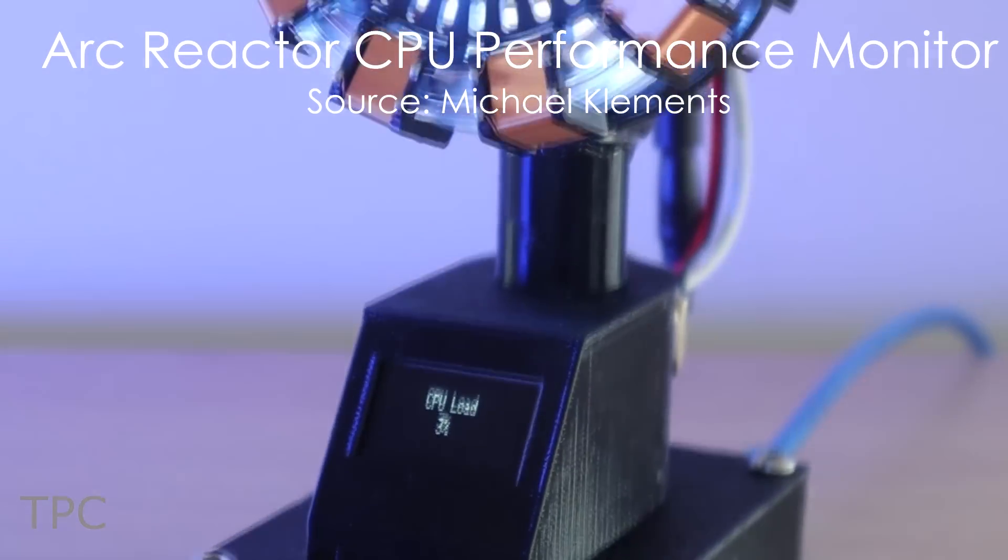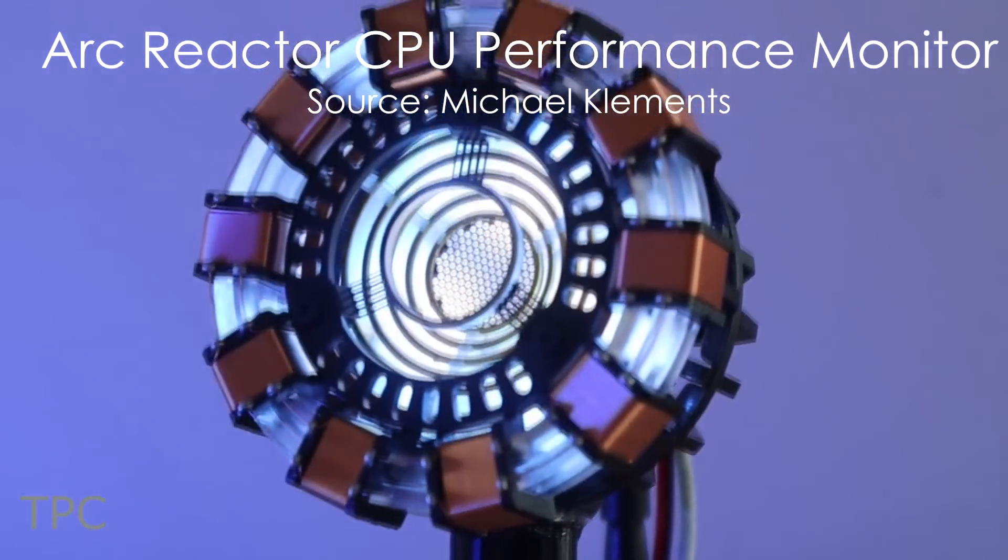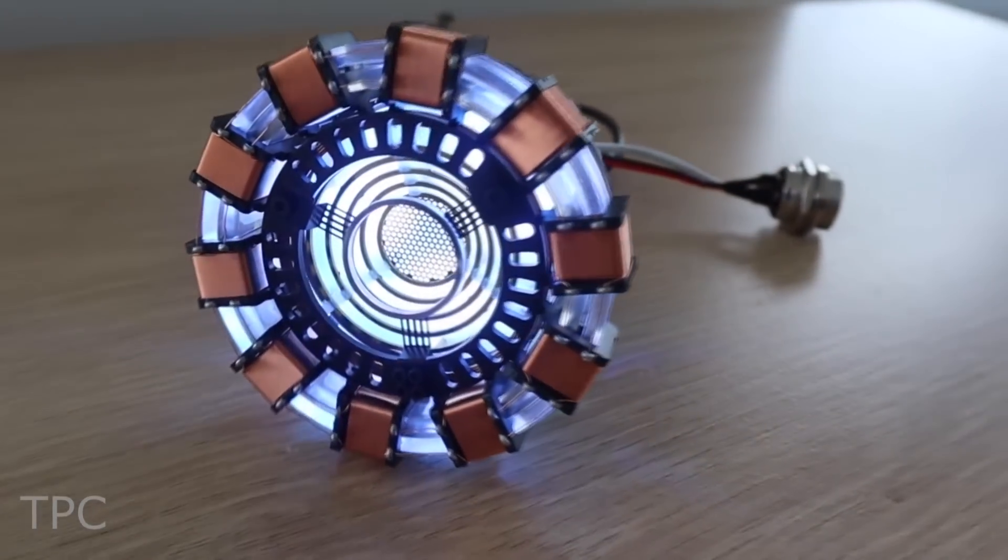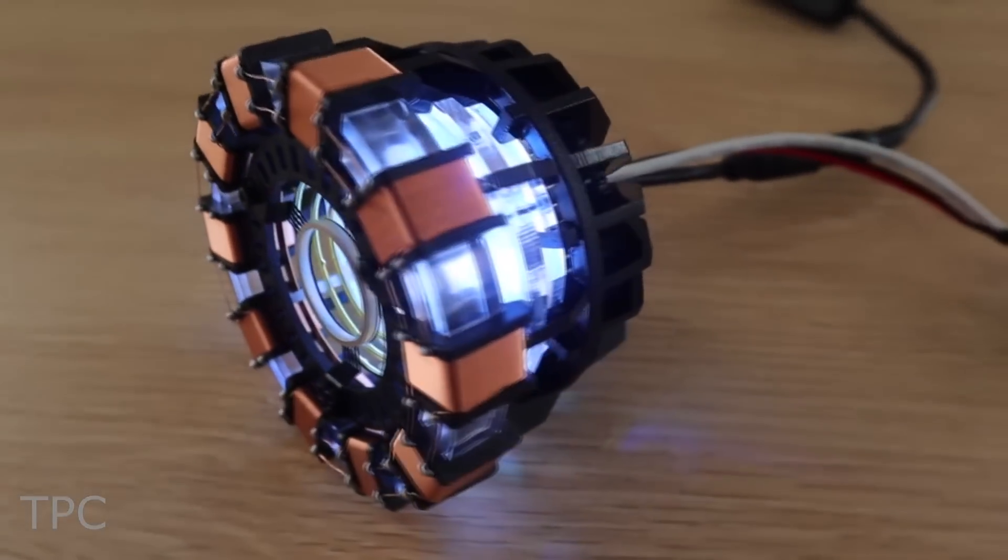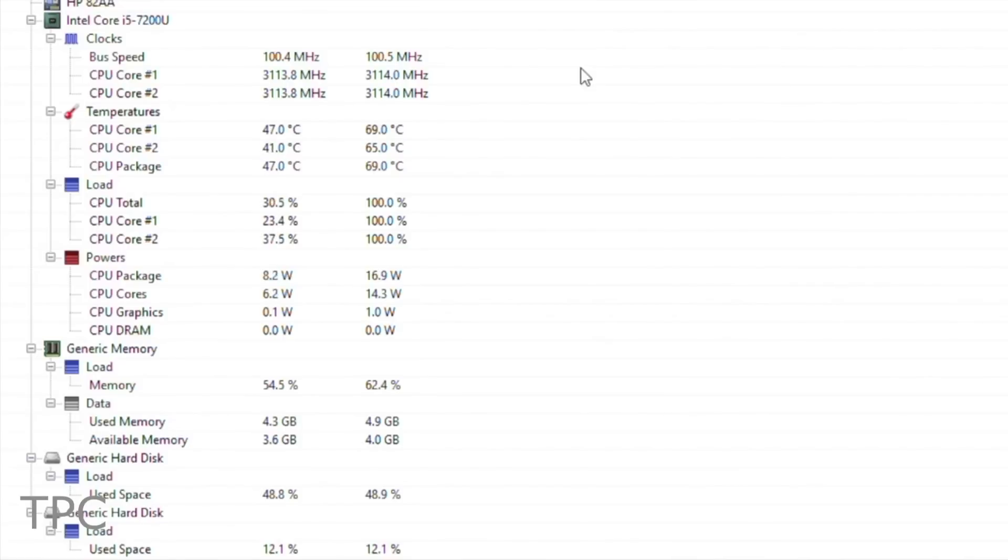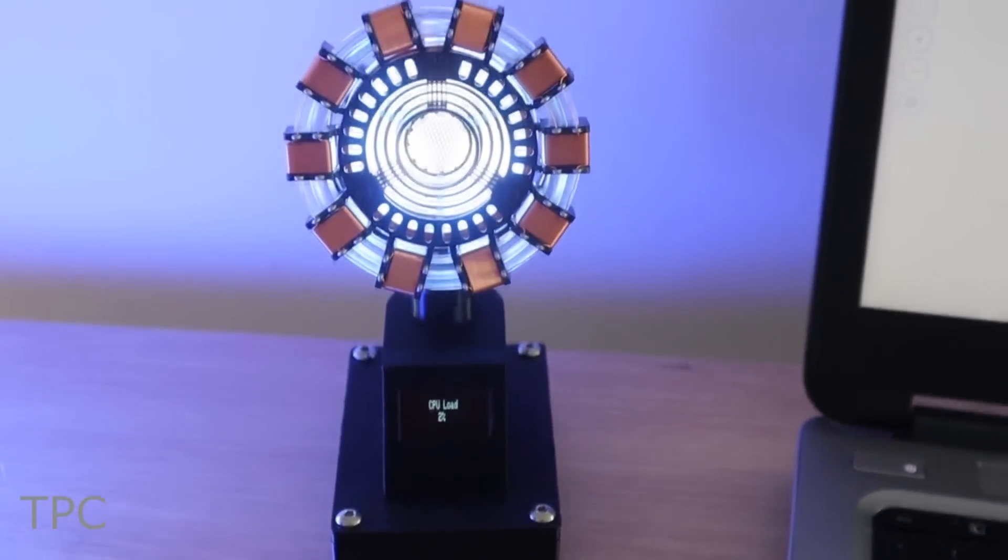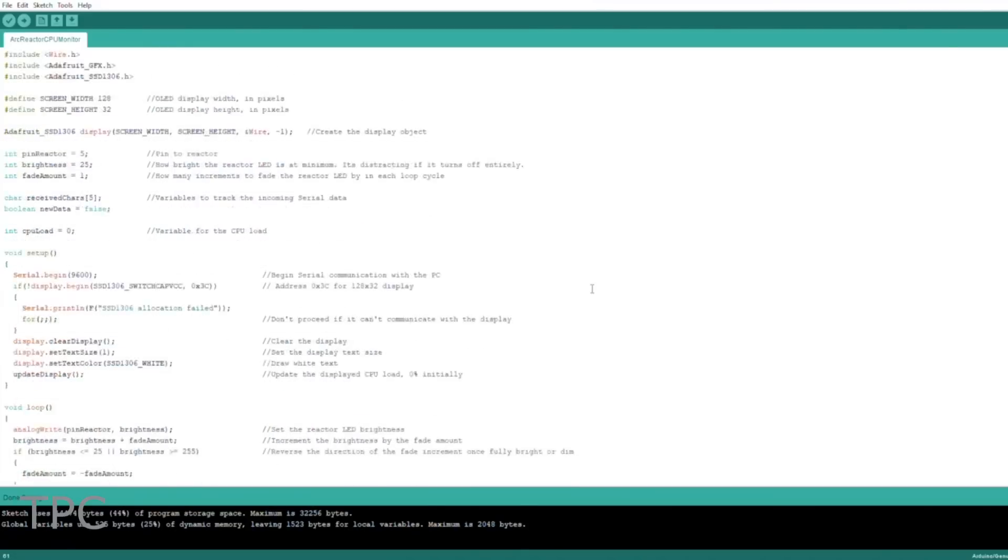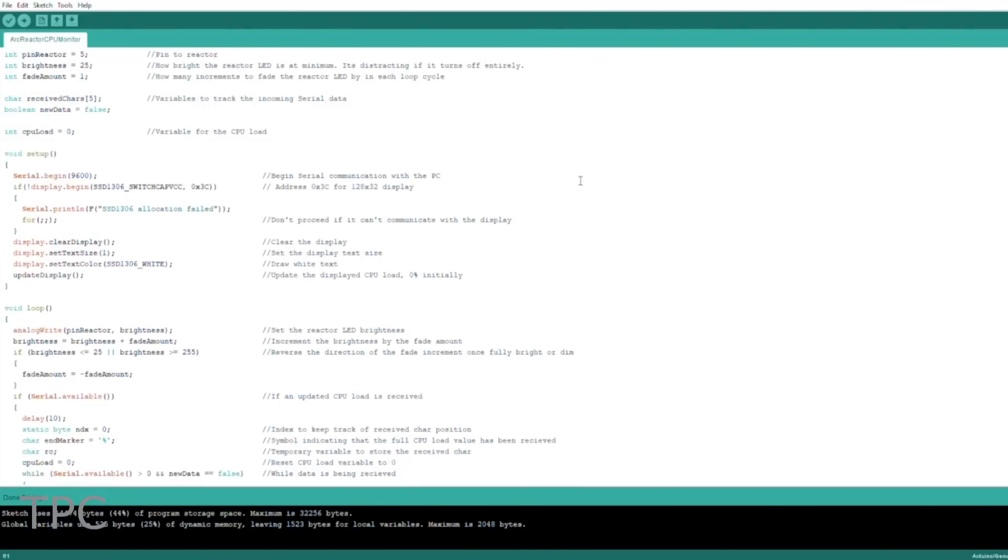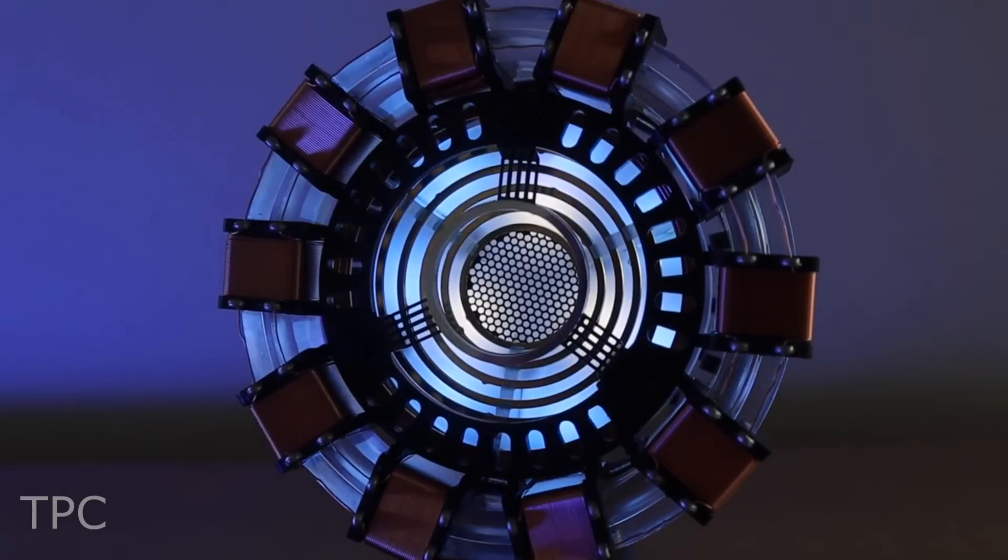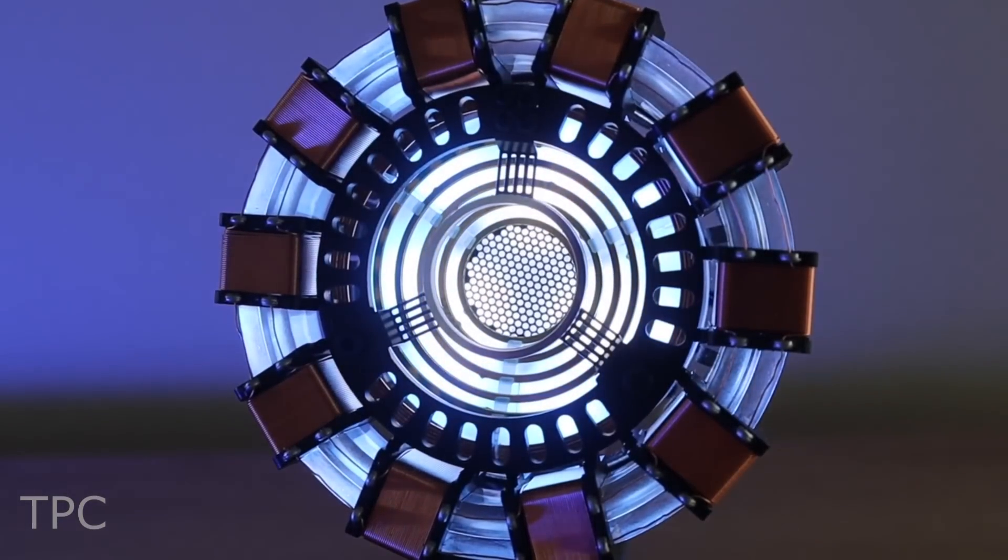This is an Arc Reactor CPU performance monitor. It plugs into one of your computer's USB ports and displays the CPU performance. A Python script reads the performance data from a hardware monitoring application and posts this data to the Arduino through a serial communication port. The Arduino receives updates on the computer's CPU usage every two and a half seconds and adjusts the pulse duration of the Arc Reactor accordingly.